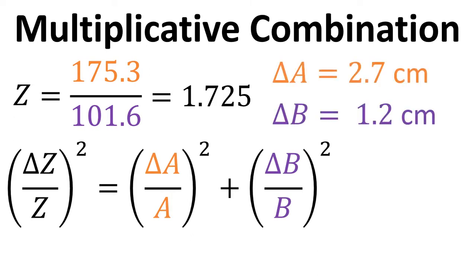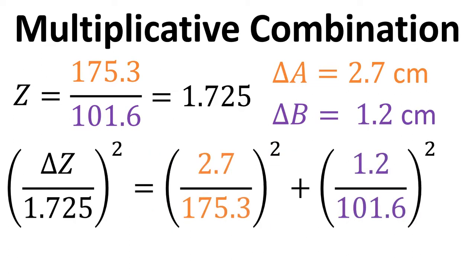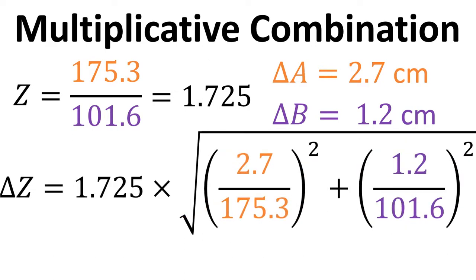Now we know the value of delta A and delta B, so we can put those values in along with the values of A, B and Z. If we rearrange, then we can calculate the value of delta Z.